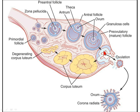Initially, the primordial follicles are present in large numbers in the ovary and consist of the primary oocyte. Under the action of follicle stimulating hormone, these primordial follicles start proliferating and form the primary follicle, which gets converted into the pre-antral follicle. In the pre-antral follicle, the oocyte gets surrounded by a glycoprotein membrane called zona pellucida.